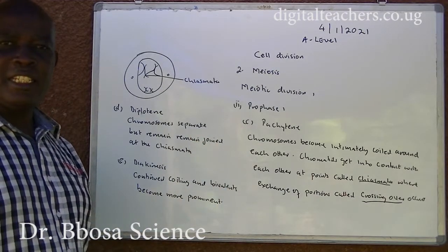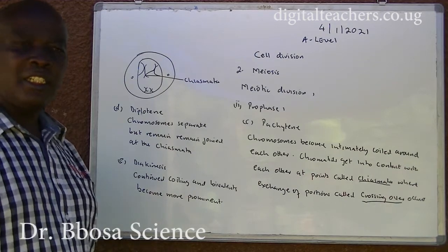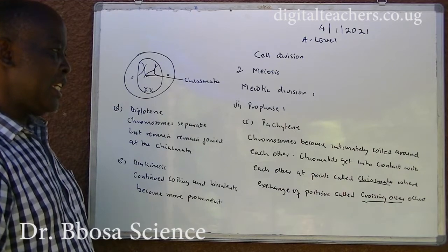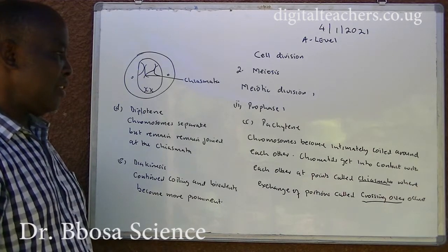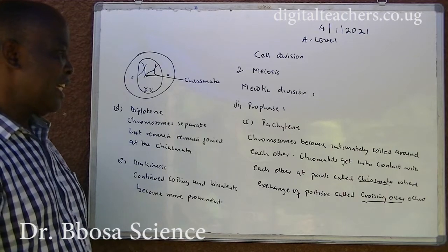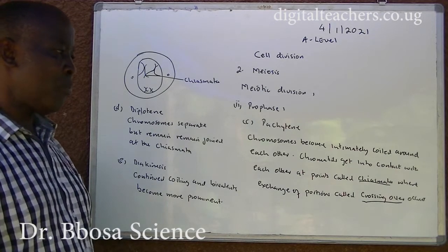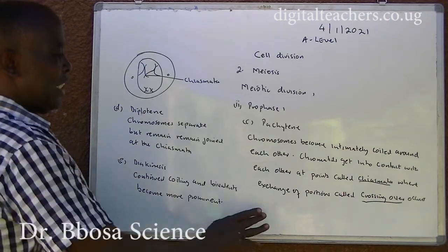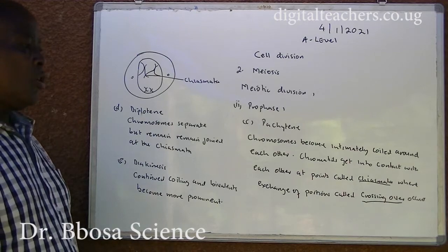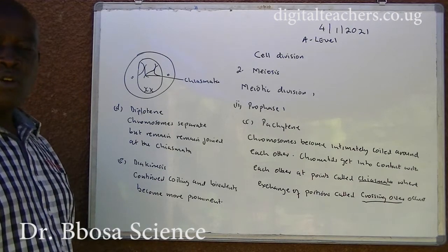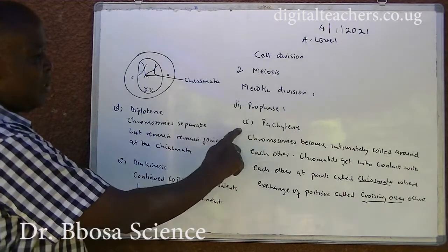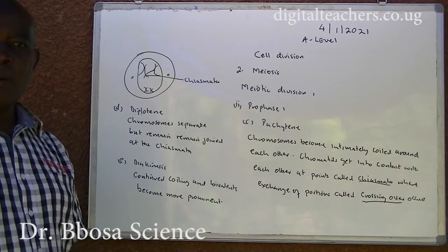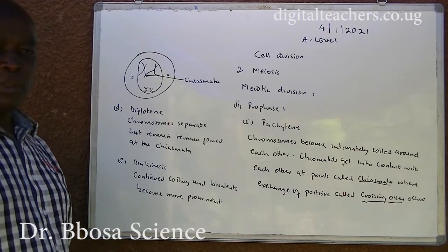In Pachytene, the third sub-stage of prophase I, chromosomes become intimately coiled around each other. Chromatids come into contact at points called chiasmata, where exchange of portions — called crossing over — occurs. This is the most important stage because it brings about variation in offspring.